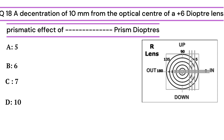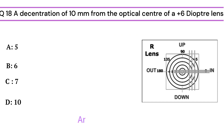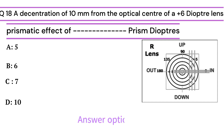Question 18: A decentration of 10 mm from the optical center of a plus 6 diopter lens produces a prismatic effect of how many diopters? Options: A - 5 prism diopters, B - 6 prism diopters, C - 7 prism diopters, D - 10 prism diopters. The answer is 6 prism diopters, calculated using Prentice's rule: prism produced is the product of decentration in mm and the power of the lens.